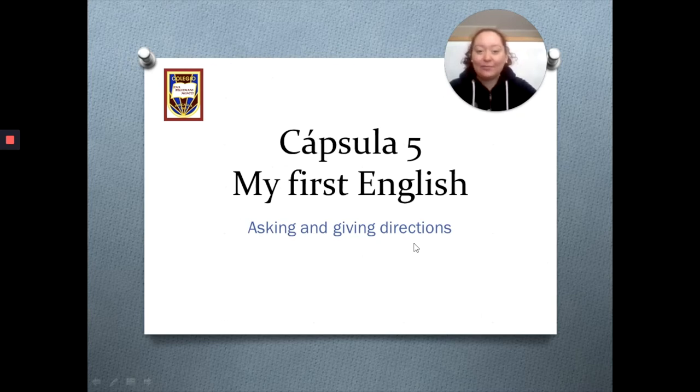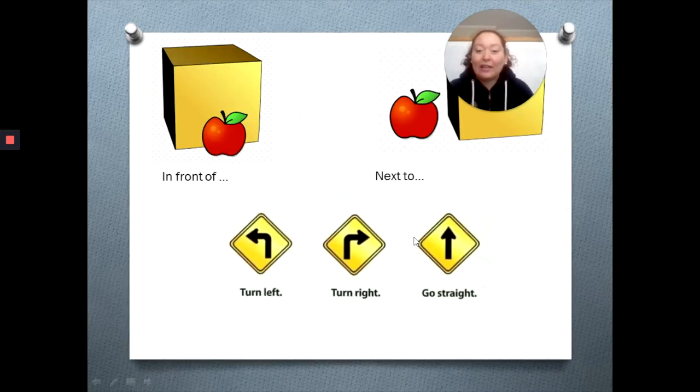Let's see. Here we have in front of, quiere decir que está frente a. In this case we have an apple which is in front of the box. Esto es súper importante porque cuando tenemos un mapa de una ciudad o conocemos una ciudad nos vamos a encontrar con edificios que se encuentran en frente de otros. Ahora tenemos un next to. Next to se refiere a al lado de. And in this case here we have an apple which is next to, al lado de esta caja, the box.